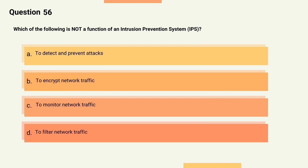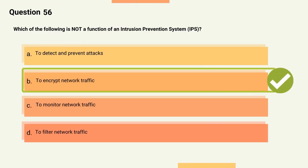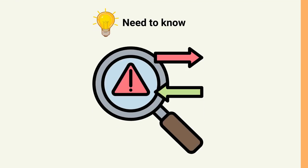Question 56: Which of the following is NOT a function of an intrusion prevention system (IPS)? Options: A) To detect and prevent attacks, B) To encrypt network traffic, C) To monitor network traffic, D) To filter network traffic. The correct answer is Option B, to encrypt network traffic. Explanation: While an IPS can inspect network traffic for malicious activity and take action to stop it, it is not designed to encrypt network traffic.